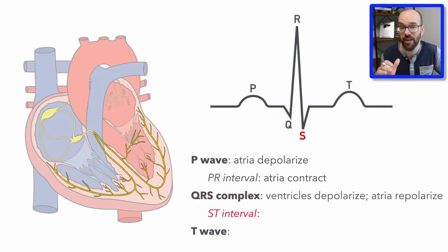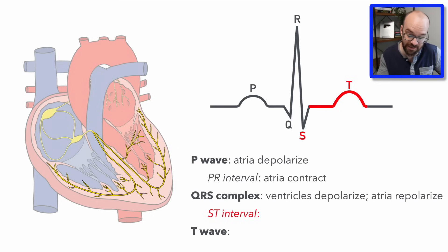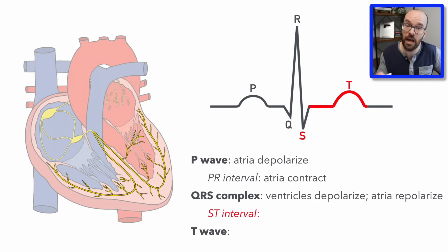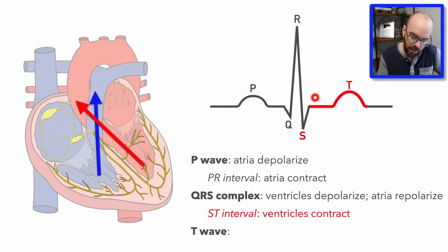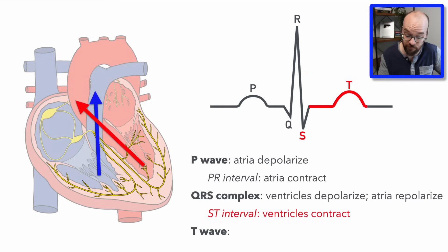Next is the ST interval, starting with S and lasting to the end of the T wave. A subset of that is the ST segment, which runs from S to the beginning of the T wave. During the ST interval the ventricles are contracting, pumping blood through the aorta and the pulmonary artery. That forceful contraction starts near the end of the QRS complex and lasts until the T wave.